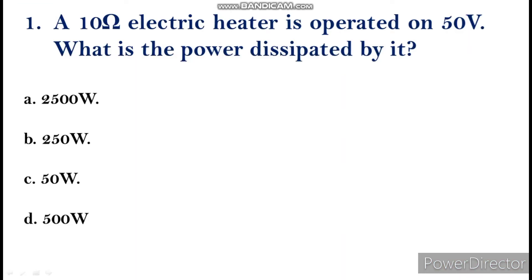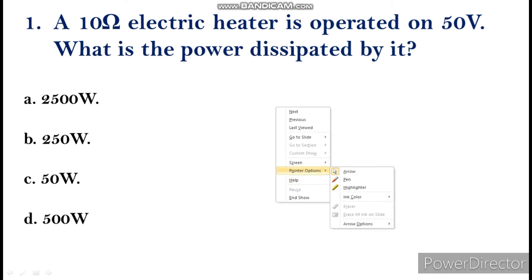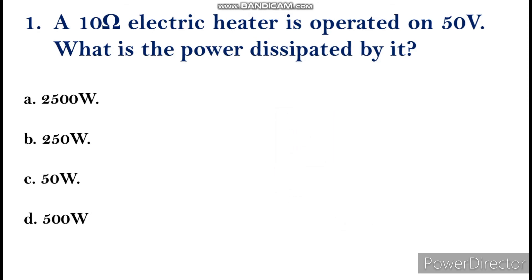A 10 ohm electric heater is operated by 50 volts. What is the power dissipated by it? They have given the resistance and the voltage.